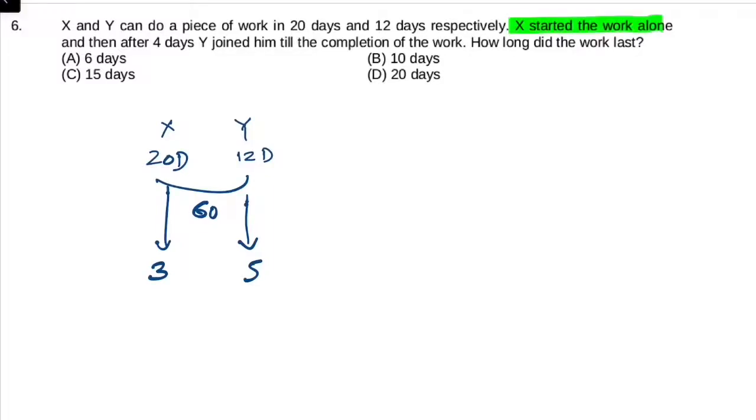Ab kya kiya raha hai? X started the work alone. Aur after 4 days kitna kaam kar lega? 12 units. Ab remaining work done kitna hai? 60 minus 12, to 48 units.